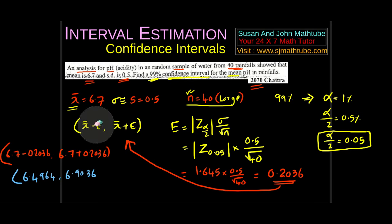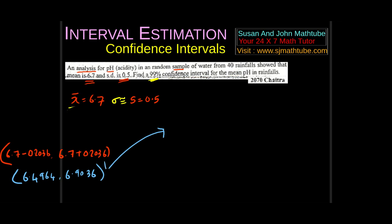So the conclusion is: we are 99% confident that the mean pH in rainfall will be between 6.4964 and 6.9036. Let's check out one more problem so that the concept becomes clear — also from your past year's question paper.